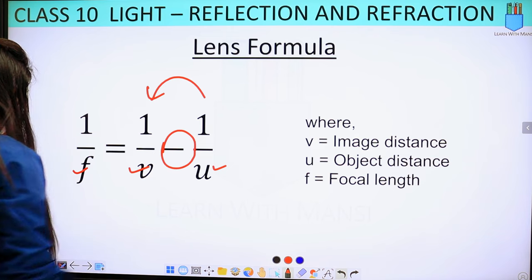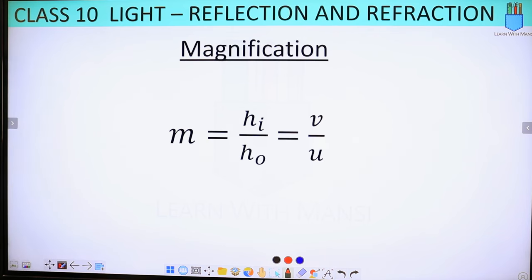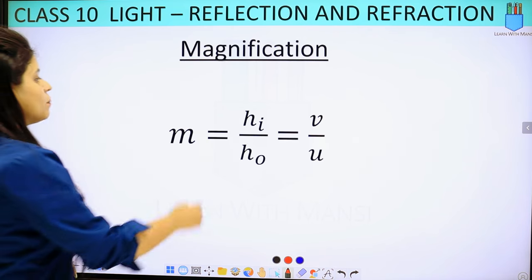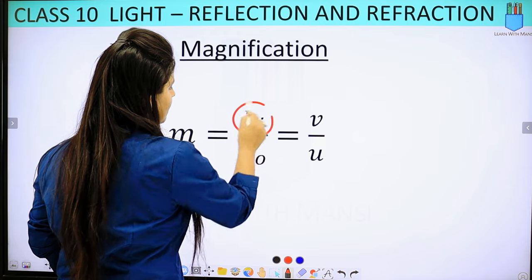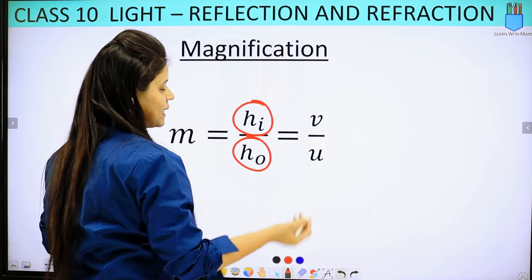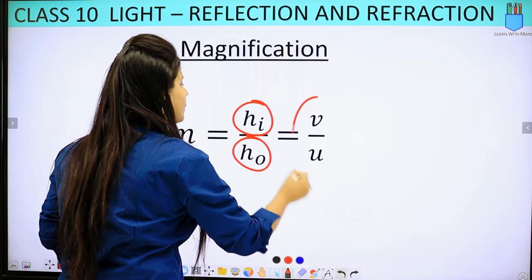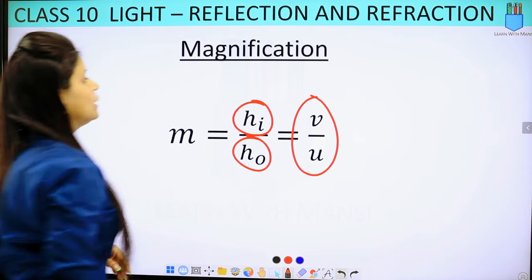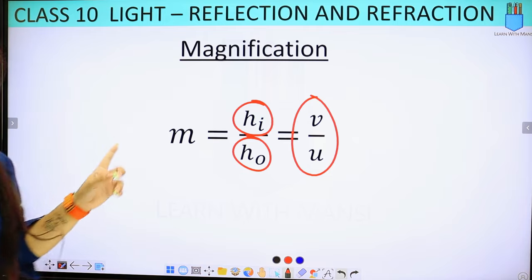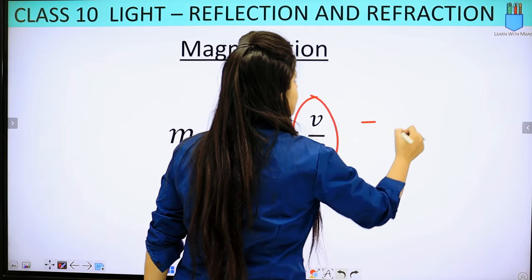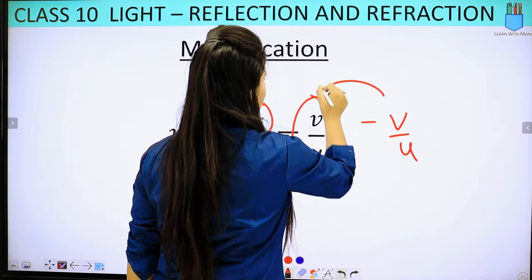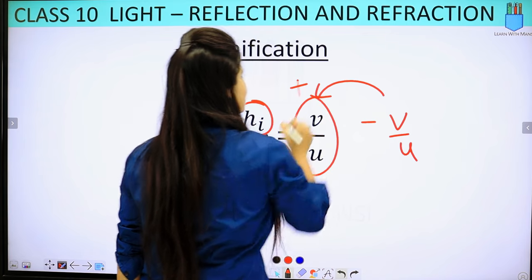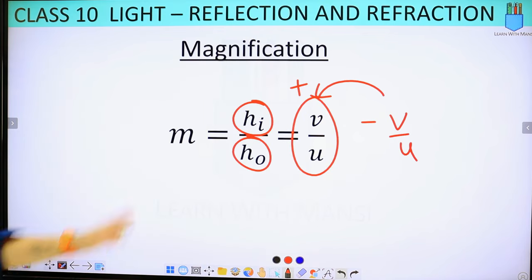Then we have the magnification. The magnification formula is the height of image upon height of object, and here it is v upon u. But when we studied in the mirror it was minus v upon u — here it is plus v upon u. So we have to take care of this difference.